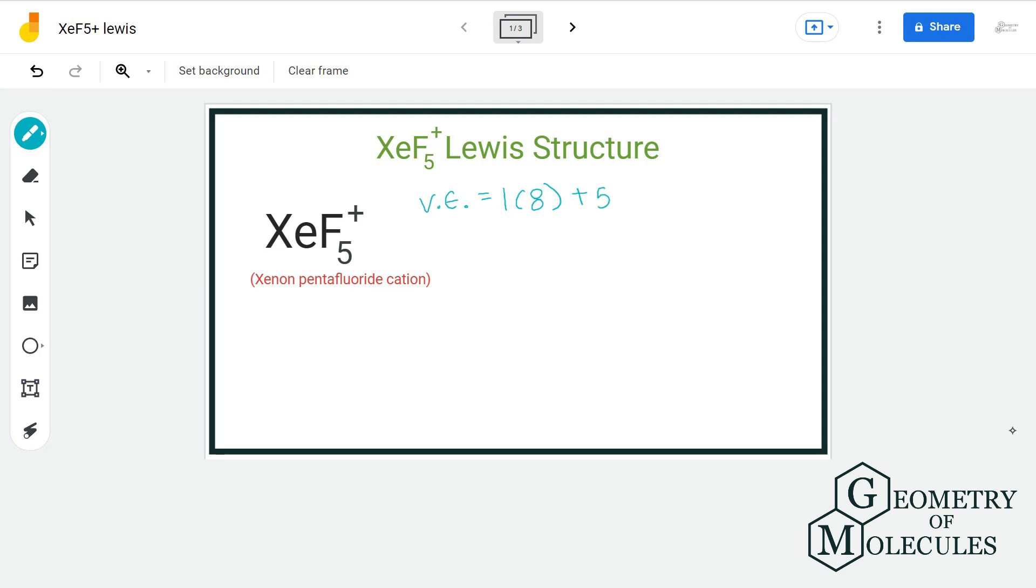5 fluorine atoms having 7 valence electrons, and this positive charge here represents loss of an additional electron. Now that gives us a total of 42.